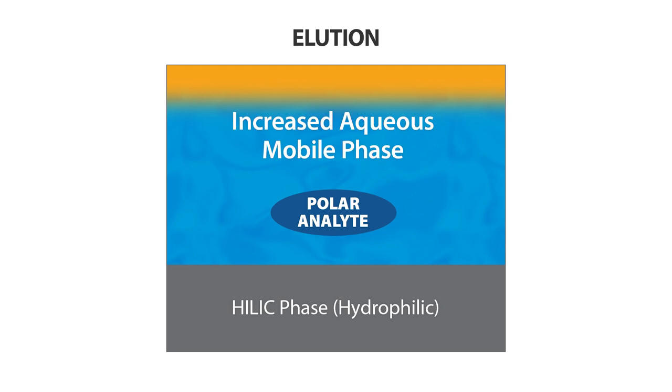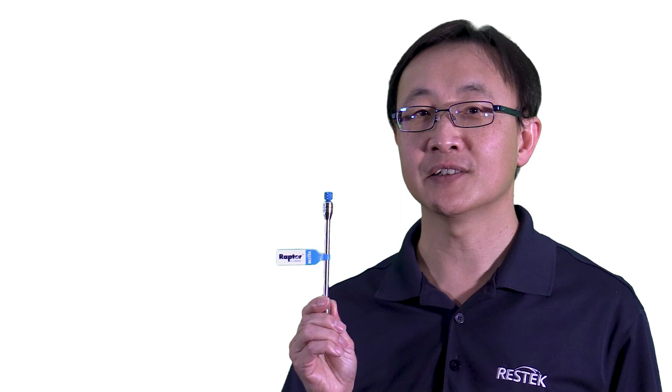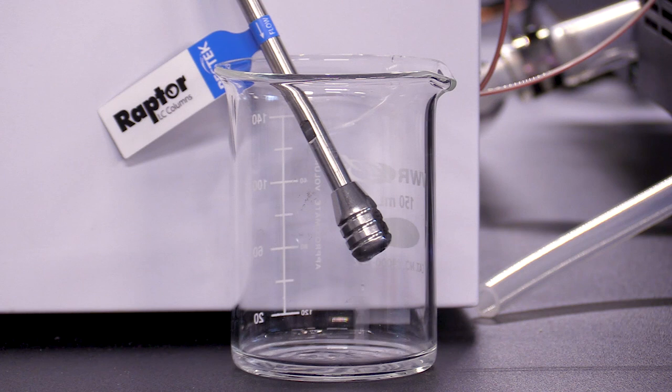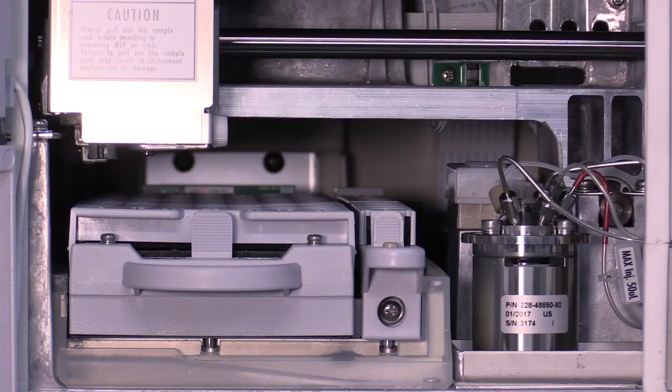Therefore, it is necessary to condition and then equilibrate the column between rounds to fully re-establish the water layer on the particle surface. When you start using a new HILIC column or change the mobile phase composition, we recommend to flush the column with at least 50 column volumes of the mobile phase.